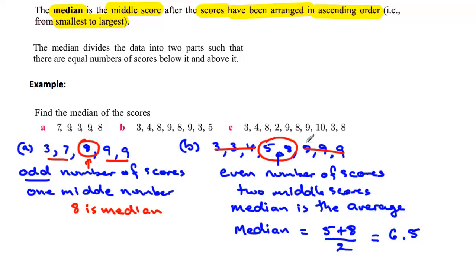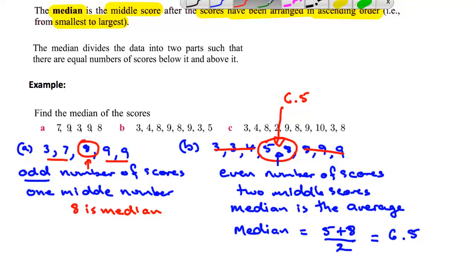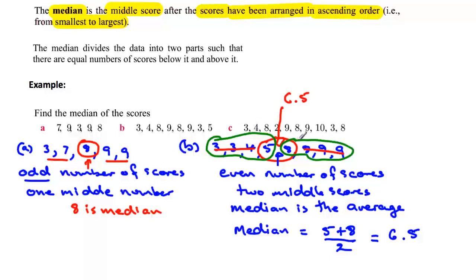You'll notice that there are 4 scores below the median and 4 scores above. So there are 4 scores below and 4 scores above. Here you've got a situation where you've got 2 scores below and 2 scores above.